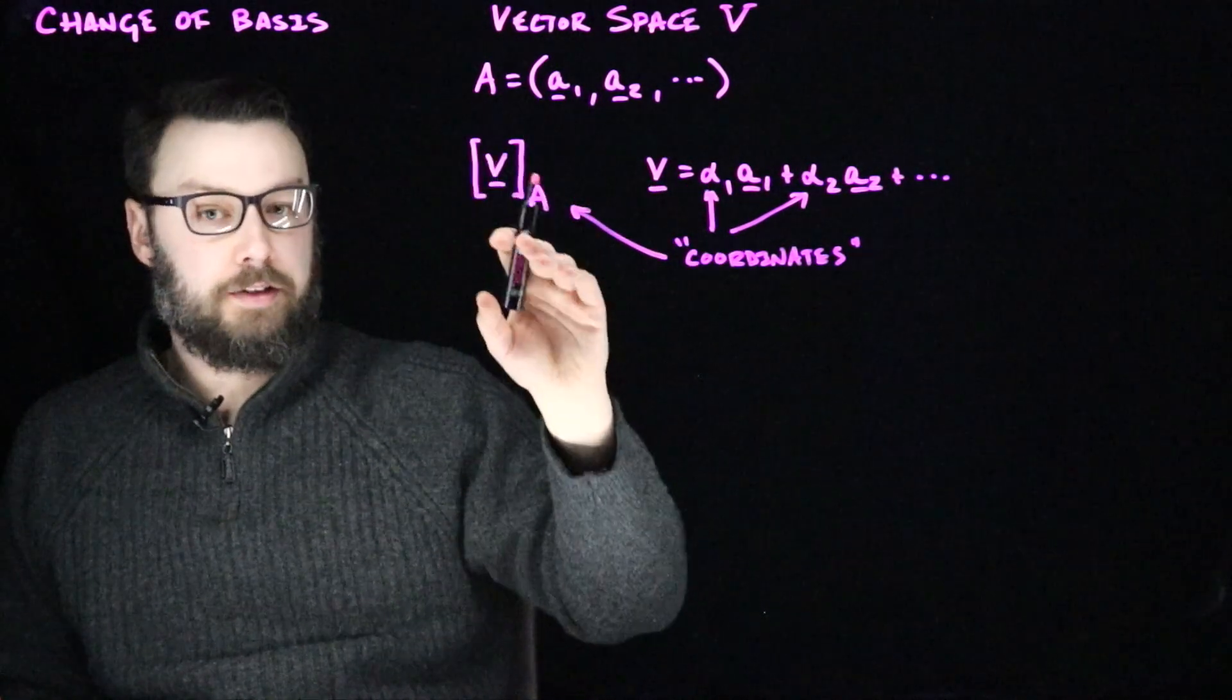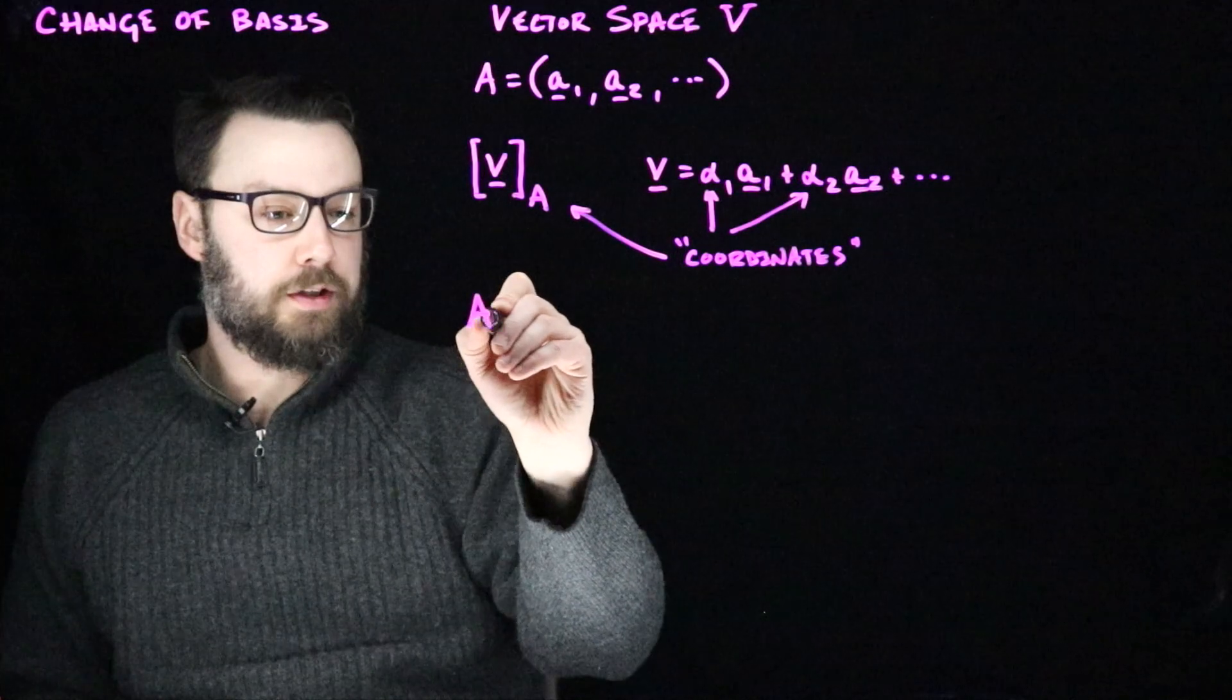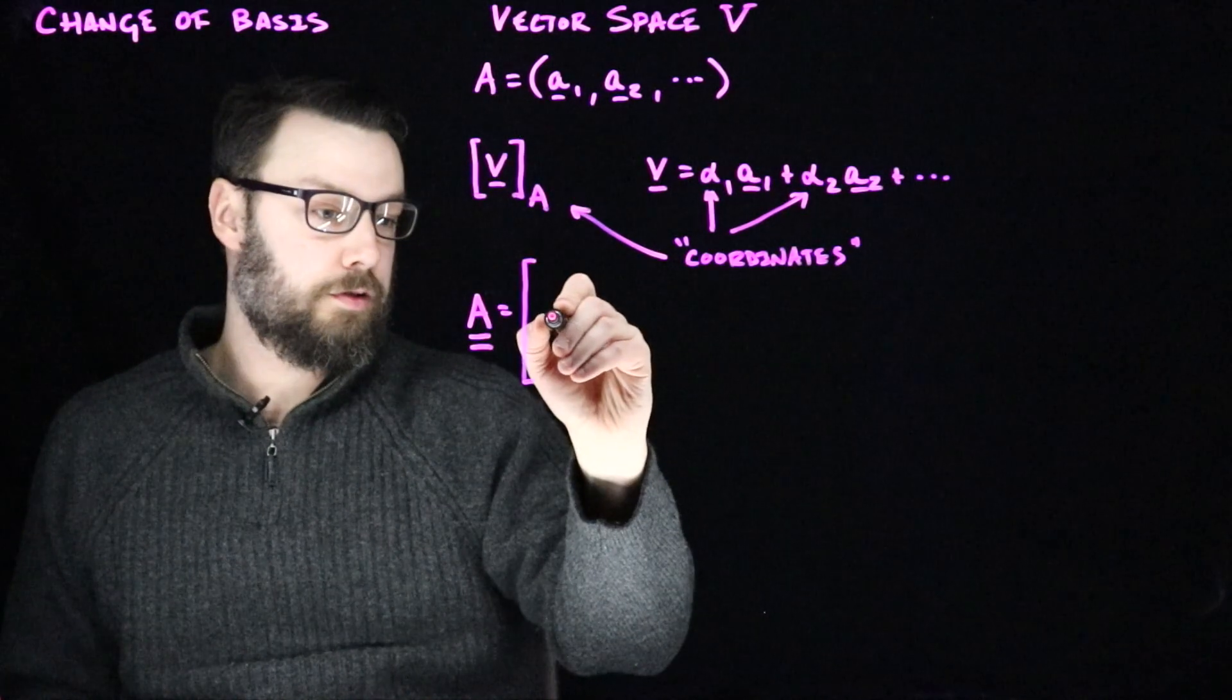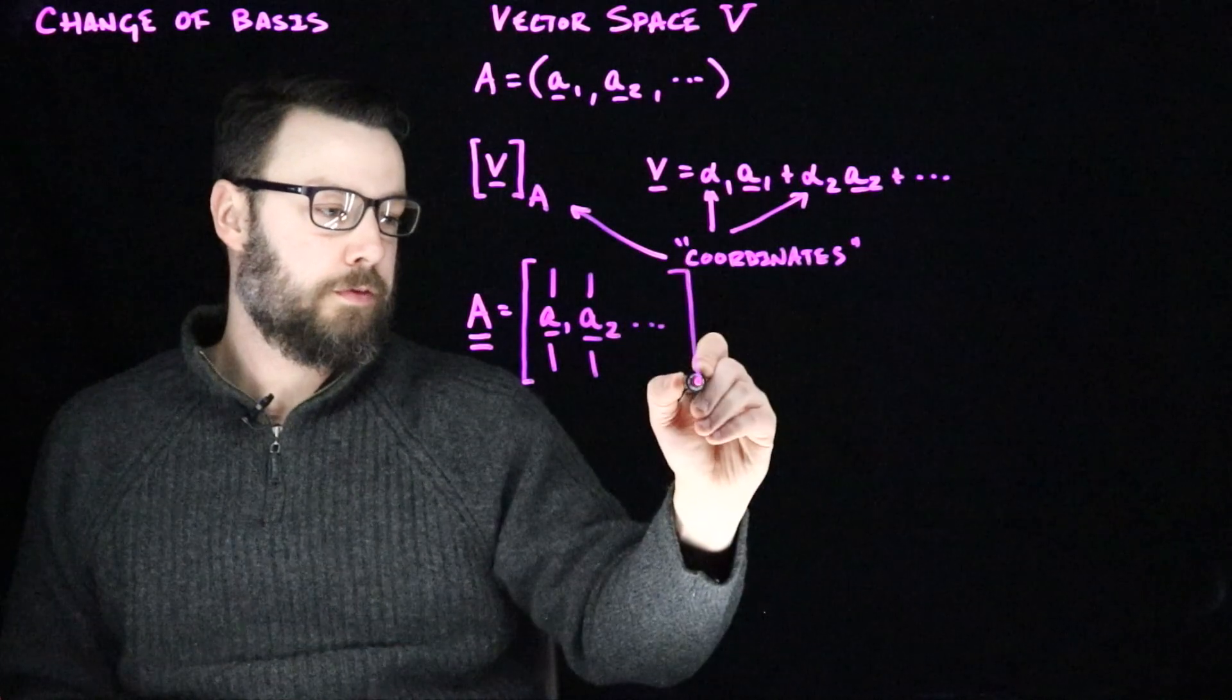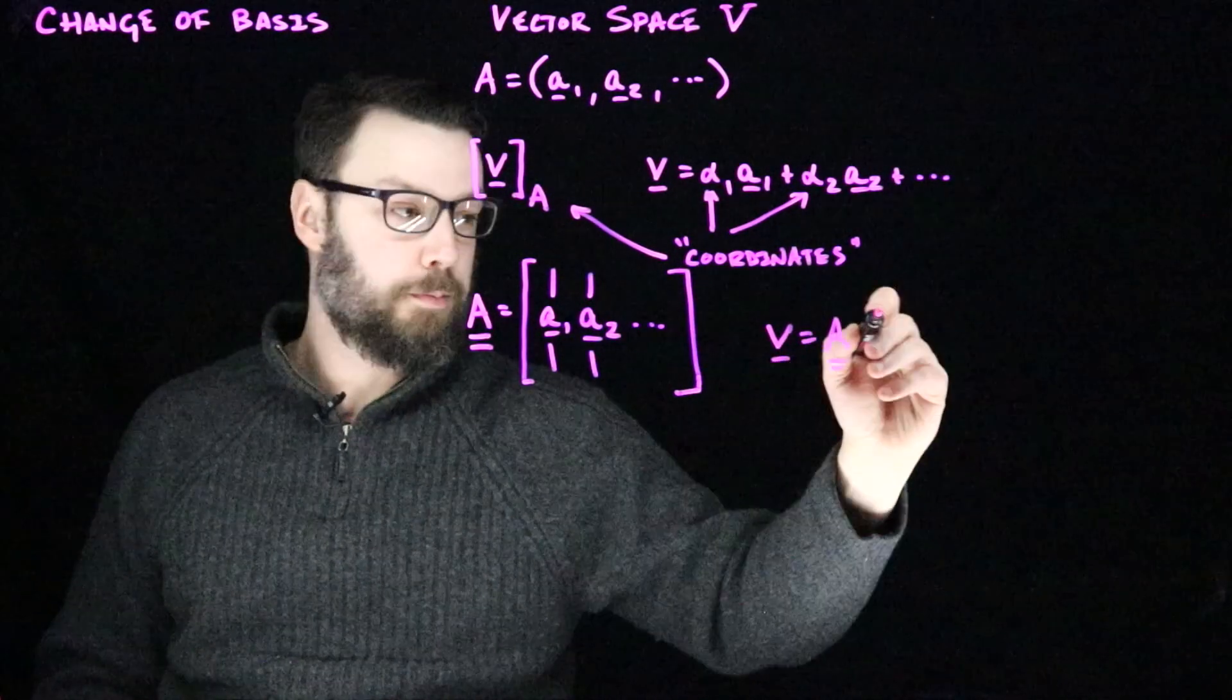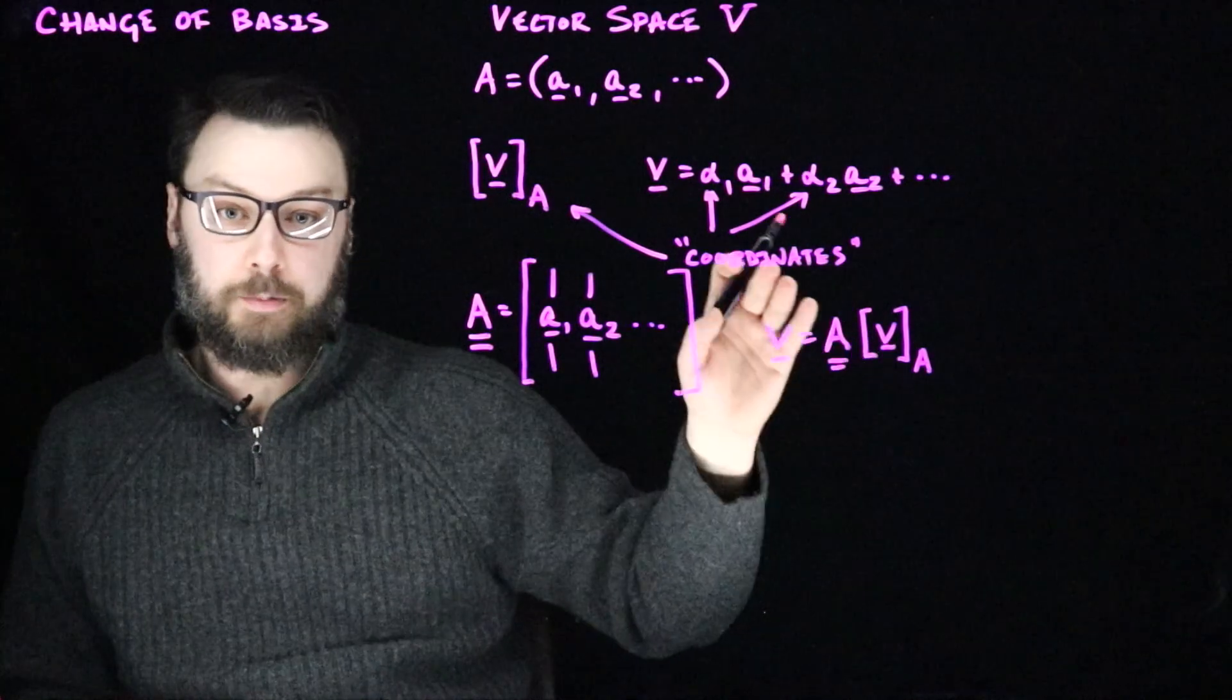When we write out the sum like this, we could write this out in a more compact way. What we could do is we could construct a matrix. Let's call this matrix A with two lines under it to indicate that I'm talking about a matrix. Let's have this be constructed by taking the basis A and having each of those vectors be the columns, so we would have a1, a2, and so on. The reason this is interesting is we can take this and now write it in a vector form. We can now say that v is equal to A multiplied by this representation of v in the basis A.